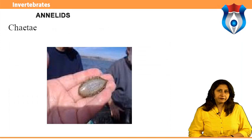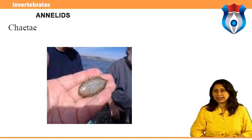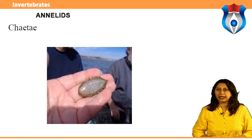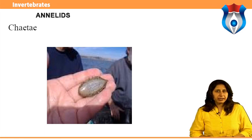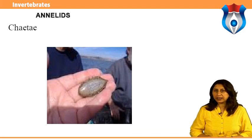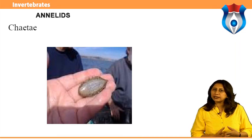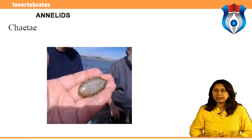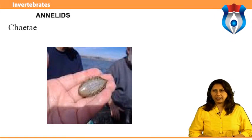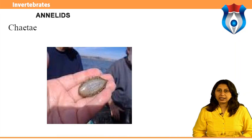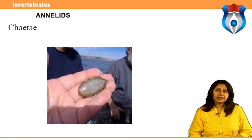Chaetae: a distinctive feature of annelids is structures called chaetae, also called setae — bundles of chitinous thin-walled cylinders held together by sclerotinized protein. They are produced by a microvillar border of invaginated epidermal cells and defined as cuticular structures developing within epidermal follicles. Chaetae show great variation from long thin filaments to stout multi-pronged hooks. Apart from annelids, chaetae are found in echiura and brachiopoda. The homology of brachiopod chaetae with those of annelids remains unresolved.